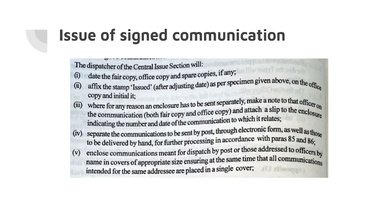Let us now look at the issue of signed communications. The dispatcher of the central issue section will date the fair copy, office copy, and spare copies, if any, affix the stamp issued after adjusting the date as per the specimen given in the Manual of Office Procedures on the office copy, and initial it. Where for any reason an enclosure has to be sent separately, make a note to that effect on the communication — both fair and office copy — and attach a slip to the enclosure indicating the number and date of the communication to which it relates.